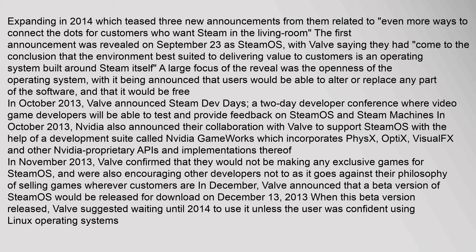NVIDIA Gameworks incorporates PhysX, Optics, Visual FX, and other NVIDIA proprietary APIs. In November 2013, Valve confirmed that they would not be making any exclusive games for SteamOS, and were also encouraging other developers not to, as it goes against their philosophy of selling games wherever customers are. In December, Valve announced that a beta version of SteamOS would be released for download on December 13, 2013. When this beta version released, Valve suggested waiting until 2014 to use it unless the user was confident using Linux operating systems.